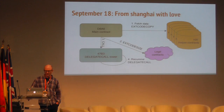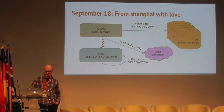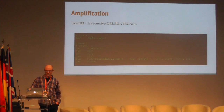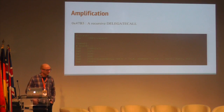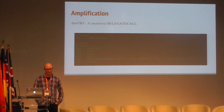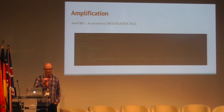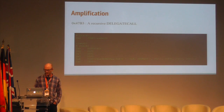After it had done EXTCODESIZE on all those legit contracts, it made a call into 47B3, which was a delegate call tower. The delegate call was very simple — it was a call to the contract, and the contract did a delegate call to itself until it went out of gas, and the whole thing was reverted.